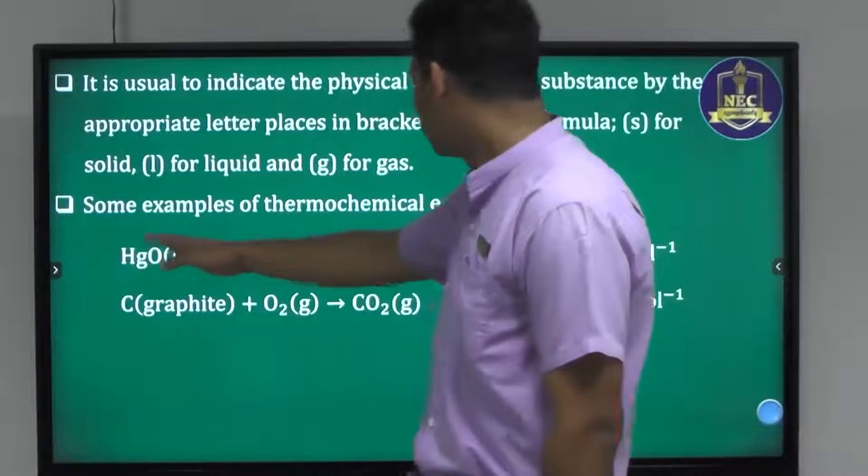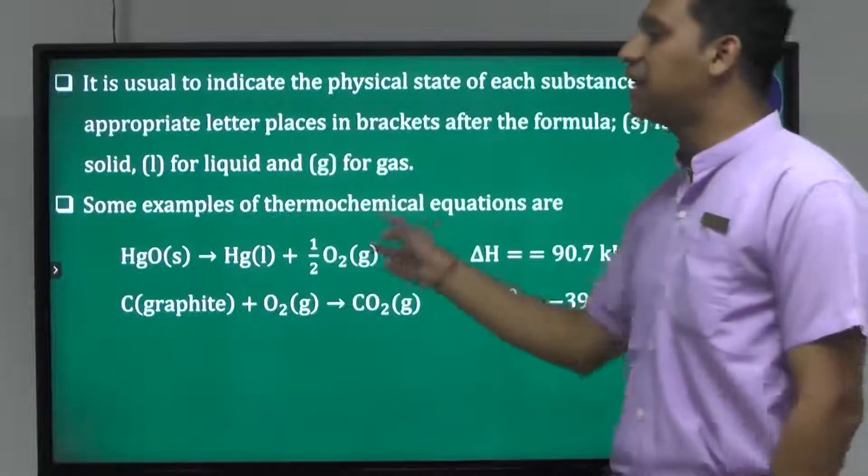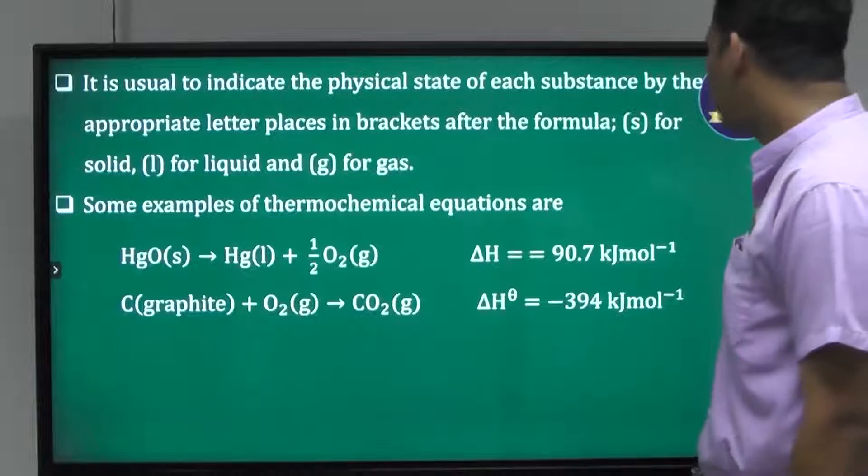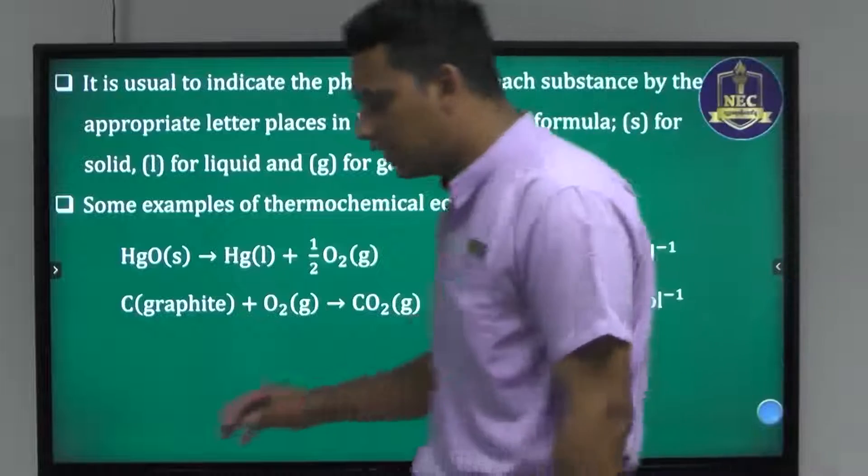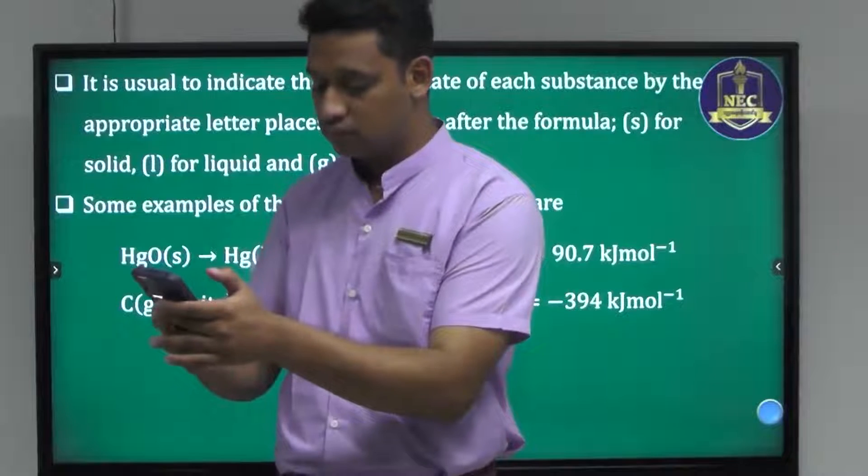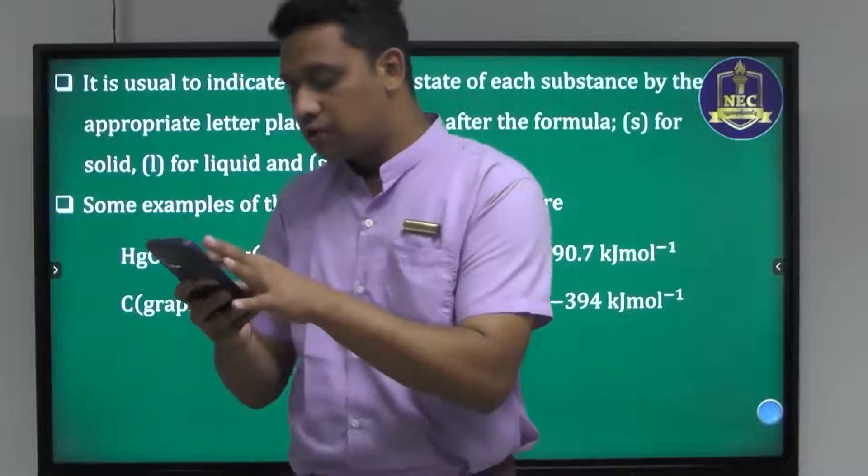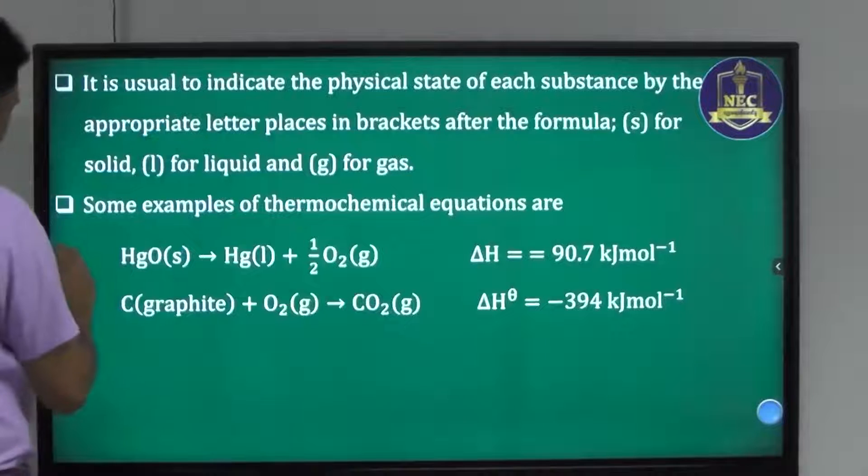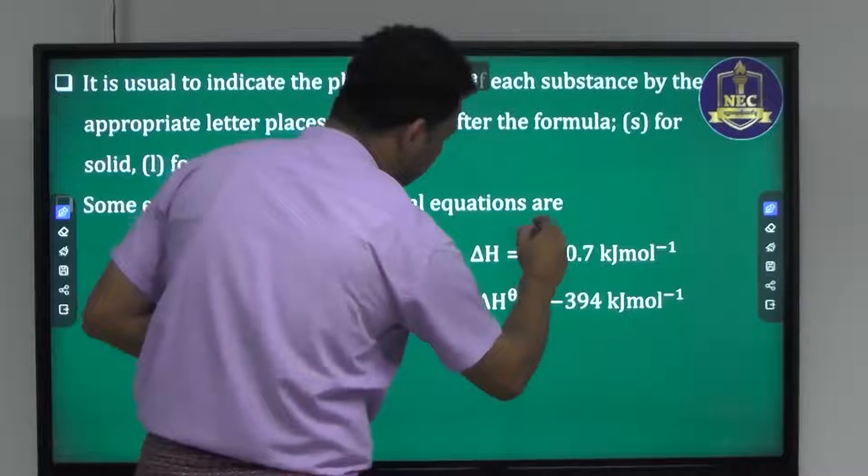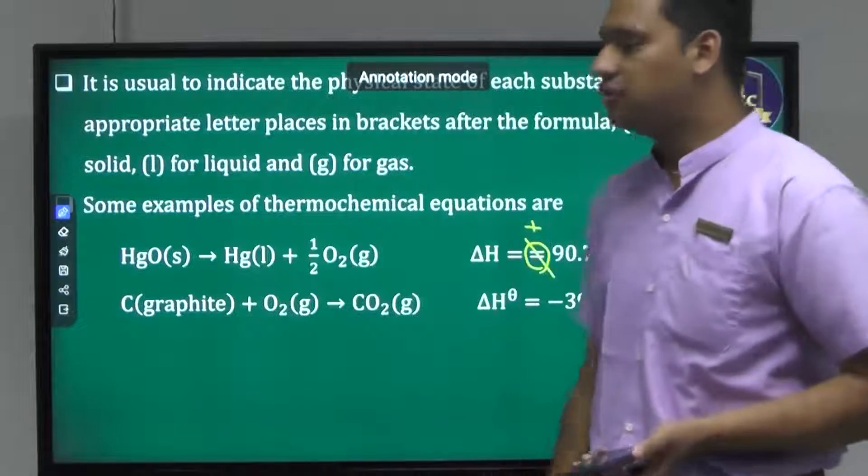The balanced equation is: 2 mercury oxide solid gives 2 mercury liquid plus oxygen gas. We need to balance the equation. If you want to write the thermochemical equation, you need to find your enthalpy change value and include the physical states.